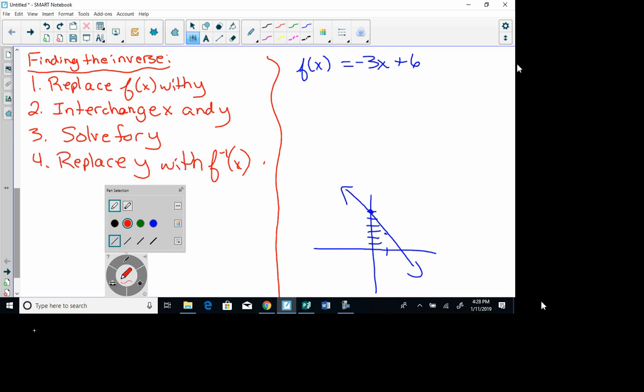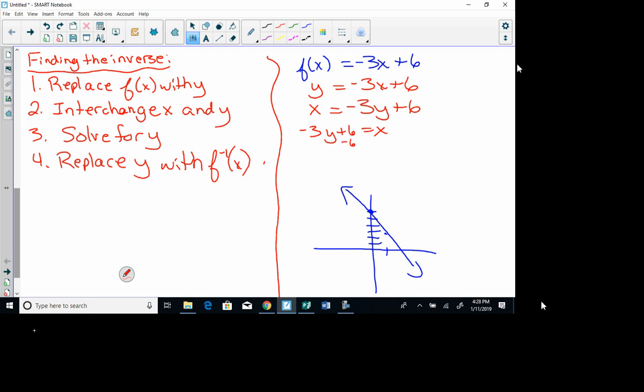And now, I'm going to find the inverse. So, I'm going to follow my steps. First of all, I replace f(x) with y. So, I'm going to write y = -3x + 6. Then I interchange the x and the y. So, I have x = -3y + 6. Now, we like to have y on the left. So, I'm just going to flip these sides around. And I'm going to say -3y + 6 = x. My next step is to solve for y. So, I'll subtract 6 from both sides. And then I'm going to divide by -3. So, that gives me y = x/-3 + 2. Now, another way you could write that is just -1/3 x + 2. That's the same thing. And then my last step says replace y with f inverse of x. So, f inverse of x equals -1/3 x + 2.